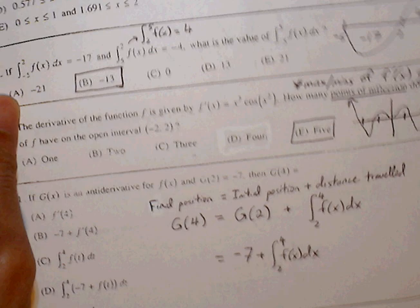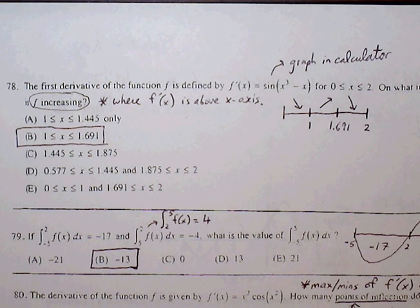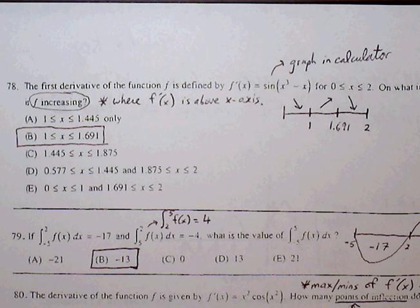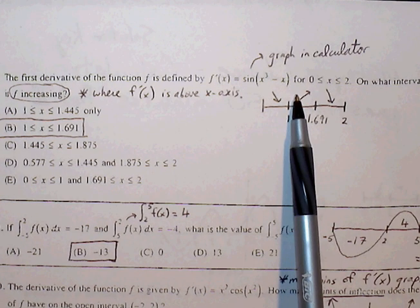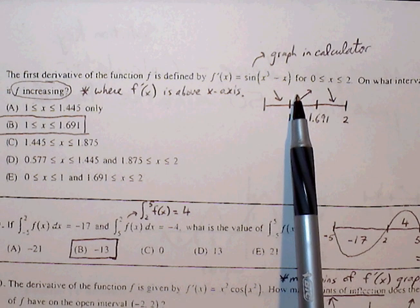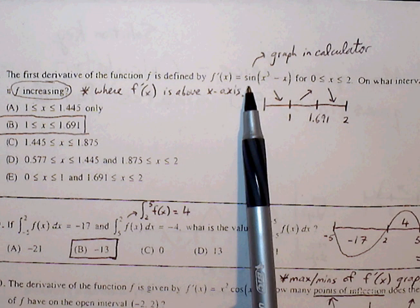Okay, 78. The derivative of the function f is defined by f prime is equal to sine of x cubed minus x for x between 0 and 2. On what interval is our function increasing? So we can just plug this in our calculator and we're looking at the f prime graph.